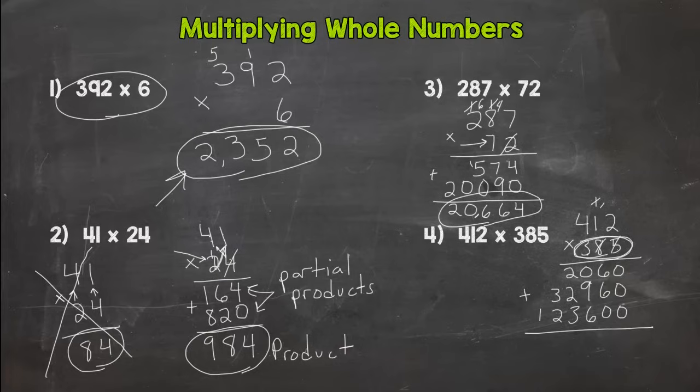We took the 5, the 80, and the 300 to each of the digits above in 412. So let's add these together to give us our final product. 0 is 0, 6 plus 0 plus 0 is 6, 2 plus 6 plus 0 is 8, 0 plus 2 plus 6 is 8, 2 plus 3 plus 3 is 8, 1 plus 2 is 3, and we have a 1. So 158,620.